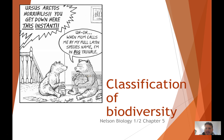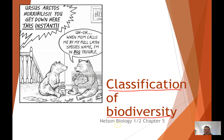Alright guys, so in today's lesson we're going to talk about classifying things — specifically the things we'll be classifying is biodiversity, which is pretty much living things. In your books, this is Nelson Biology, Chapter 5.